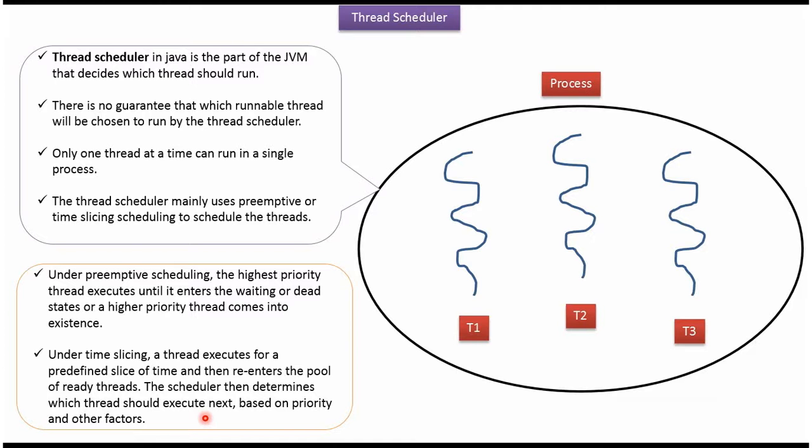Under time slicing, a thread executes for a predefined slice of time, then reenters the pool of ready threads. The Thread Scheduler then determines which thread should execute next based on priority and other factors.